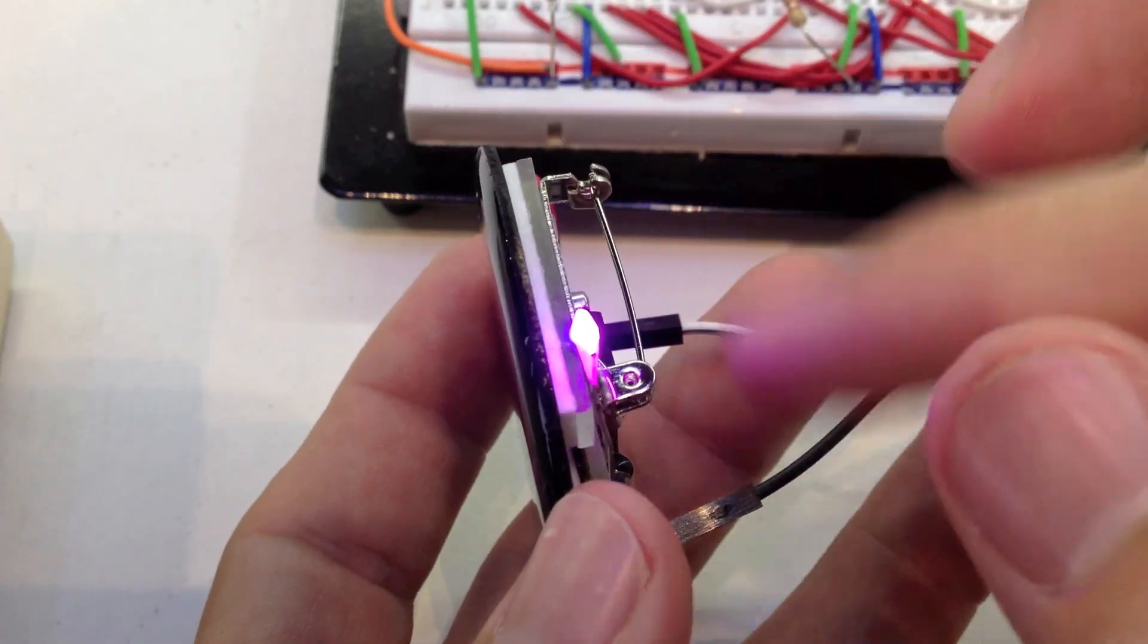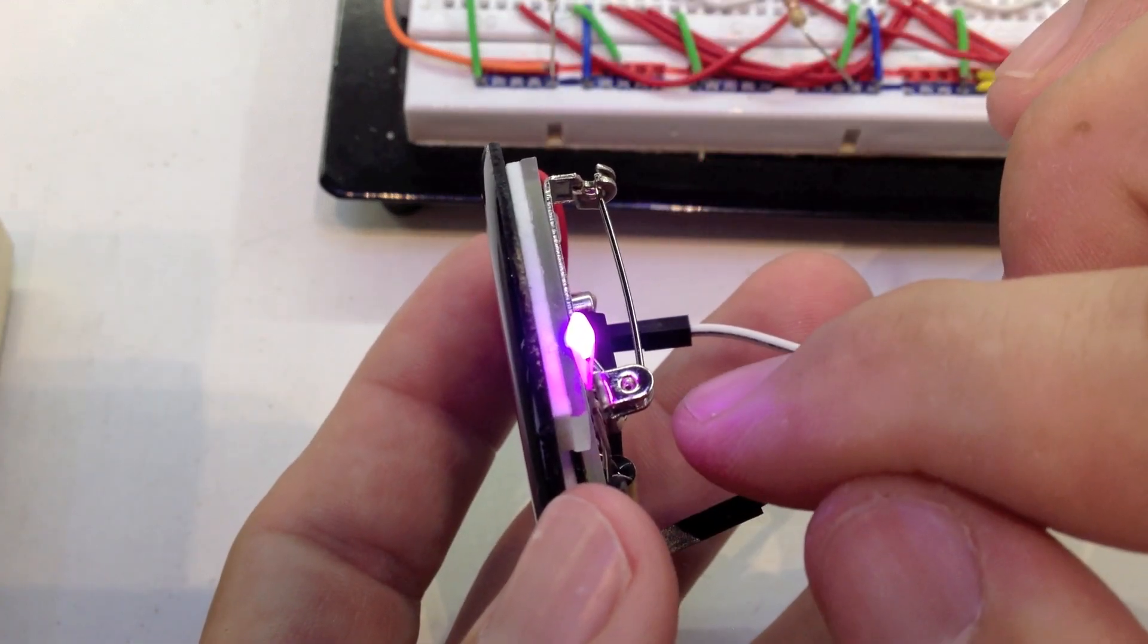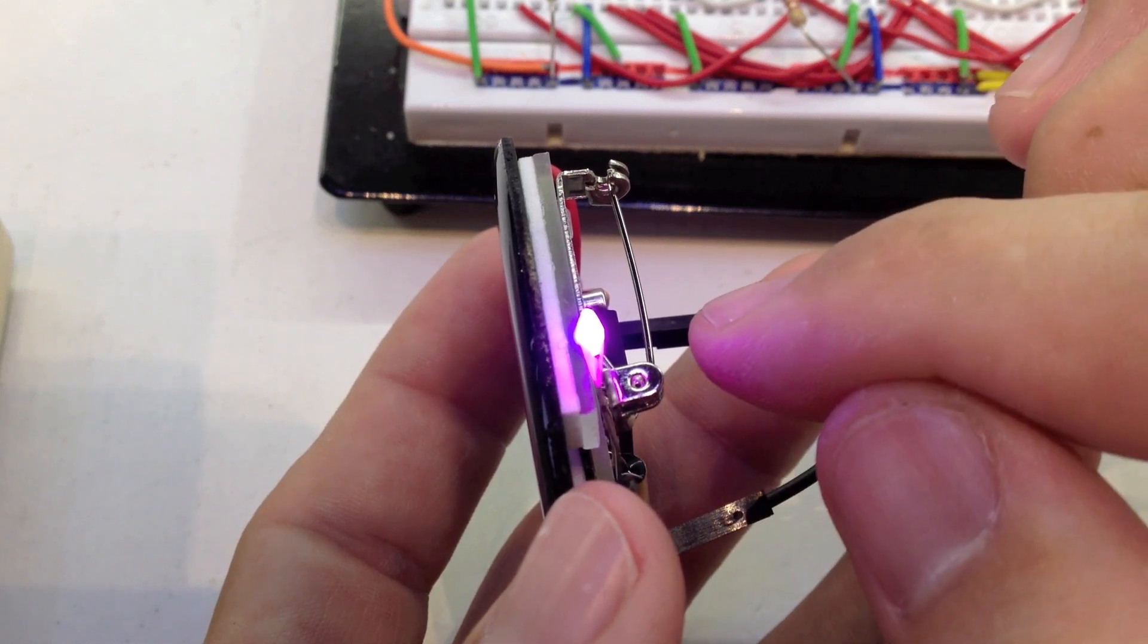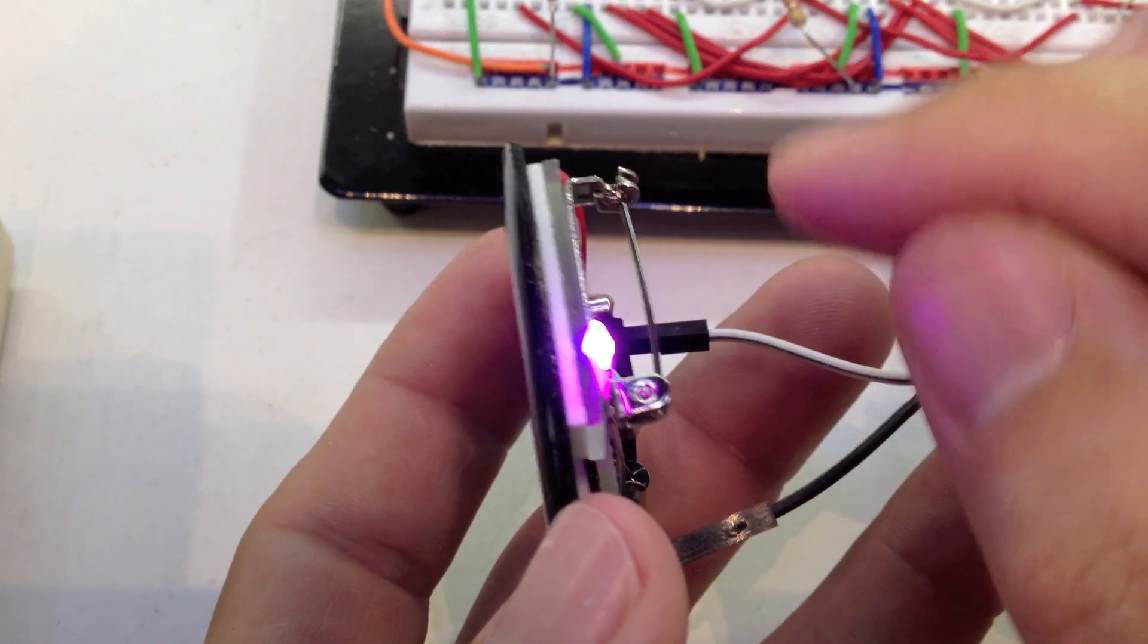How it does that is, as you just saw, it flashes the hundreds, if there is any, and then it flashes the tens, and then it flashes the ones.